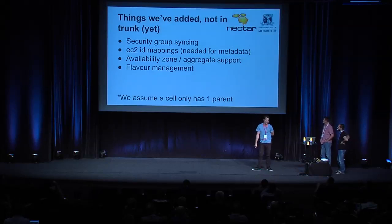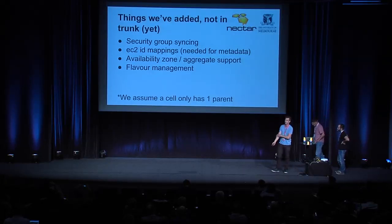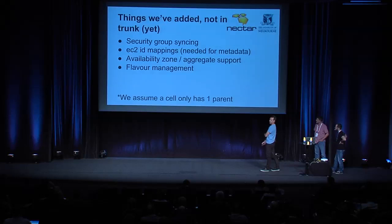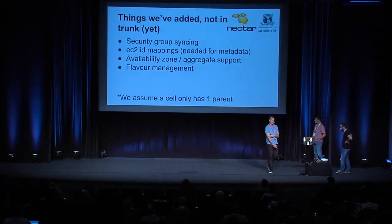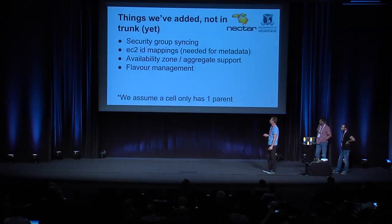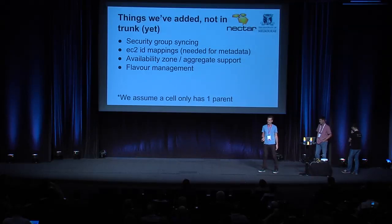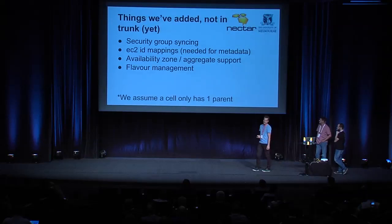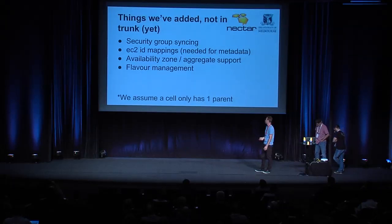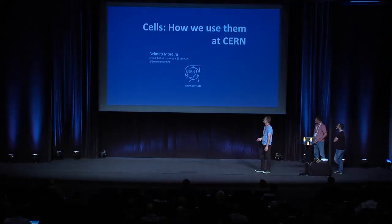Some things we've been working on that aren't in the code base — Matt will talk more about that later — include things like security group syncing, EC2 ID mappings (if you need them in the API and metadata, an instance might want to know its AMI), availability zone aggregate support (there's still no support for that yet, but there are ways around it), and flavor management — that's been on the agenda. For some of these things, we have to make an assumption that there's only one parent cell. That's it for me — I'll hand over to Belmir.